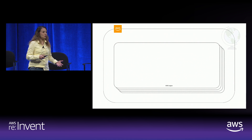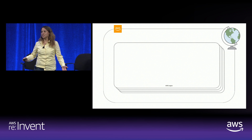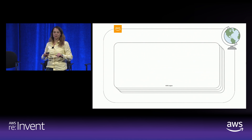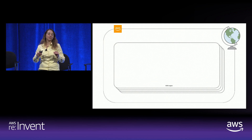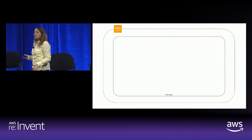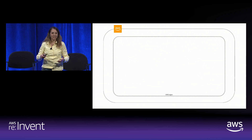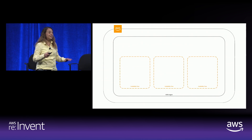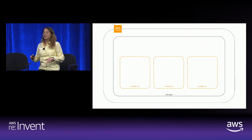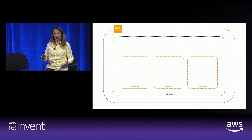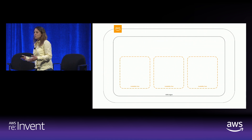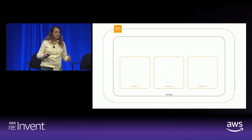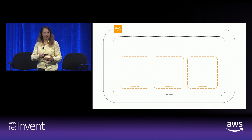AWS regions — we have 19 of them around the world, with more coming online all the time. They are actual physical locations in the world, isolated from one another. For nearly all of our services, you're actually interacting with an instance of that service in a particular region. These regions are divided into logically isolated parts called availability zones. For our purposes today, availability zones are where specifically your resources are located within a region.